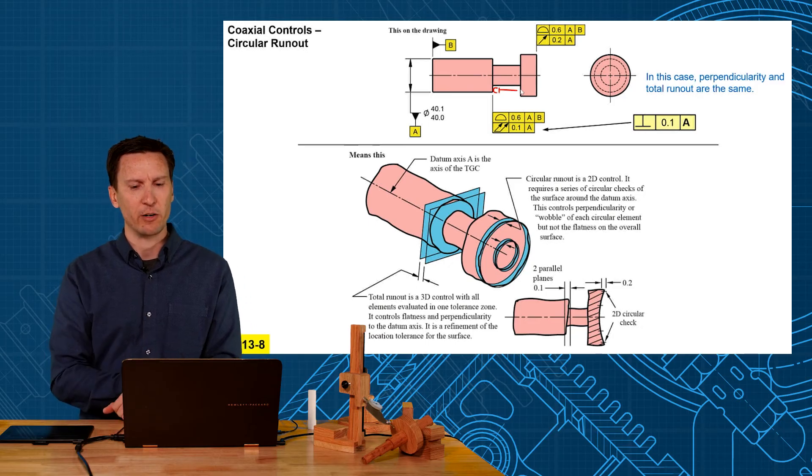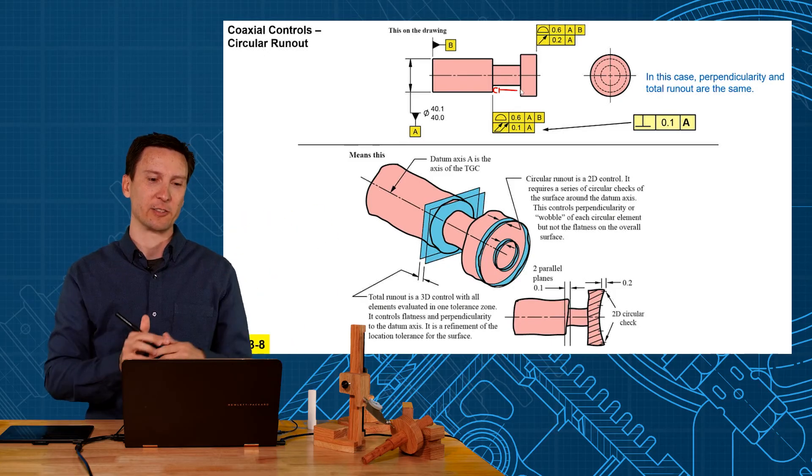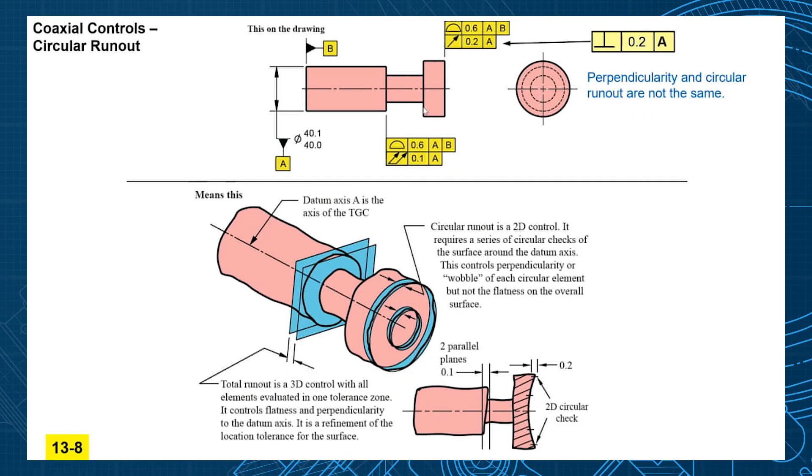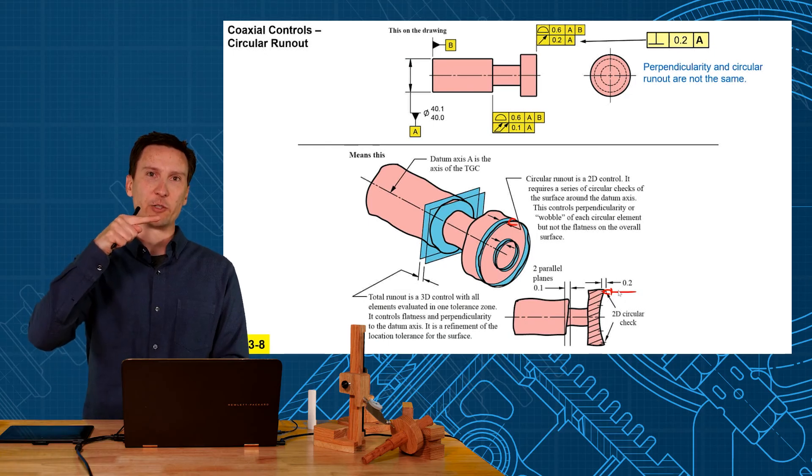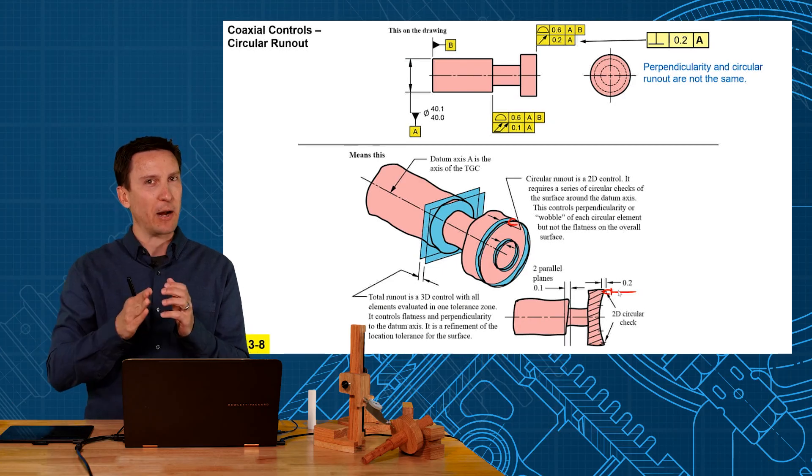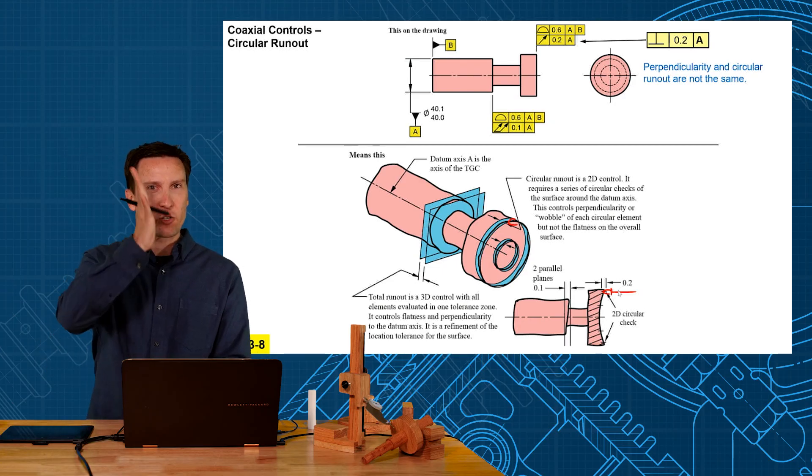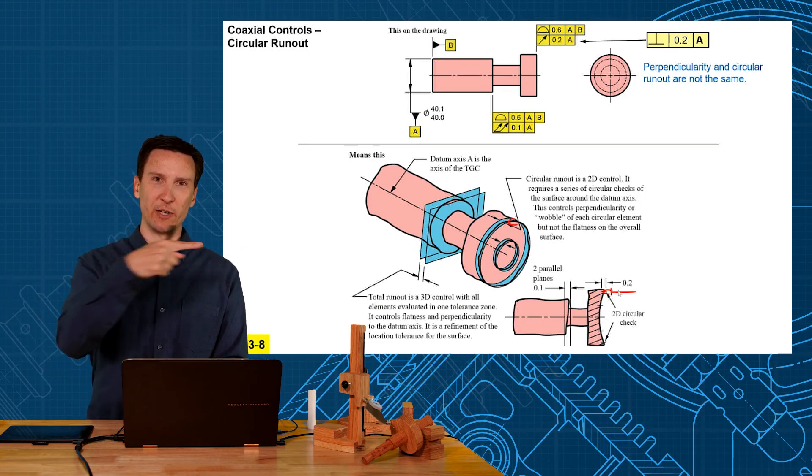That's creating that two parallel plane tolerance zone also controlling perpendicularity. That's all I want to show here is that perpendicularity and total runout are the same on a face 90 degrees to your datum axis. However perpendicularity and circular runout are not the same. Circular runout is cross sections at a time. You're going to place the indicator at one cross section, make sure that circular element runs true, then move it towards the center, make sure that circular element runs true, move it to the center, that circular element runs true. But they don't have to be compared to each other. That allows that surface to be bowl or dish shaped as long as each circular element runs true to your datum axis.